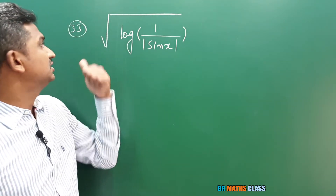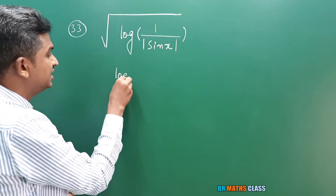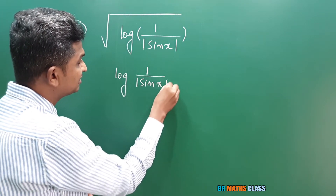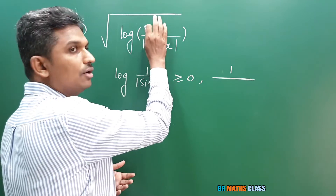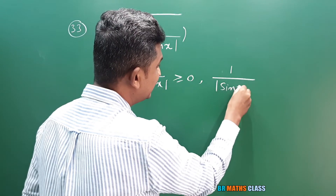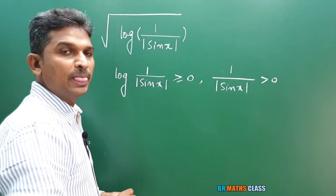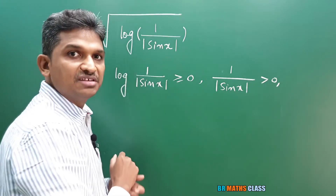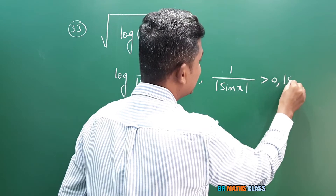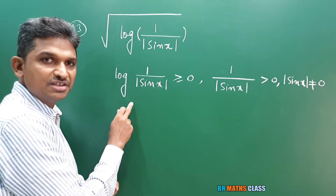Question 33: we need to find the domain of √(log(1/|sin x|)). Whatever expression is inside the square root must be ≥ 0, so log(1/|sin x|) ≥ 0. Since logarithm is defined only for positive real numbers, 1/|sin x| must be greater than 0. Also, since this is of the form f(x)/g(x), the denominator |sin x| cannot be 0.